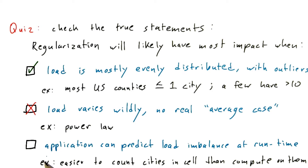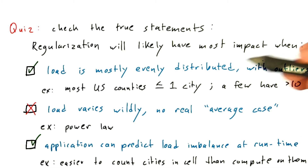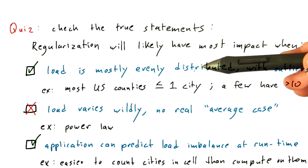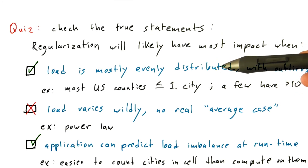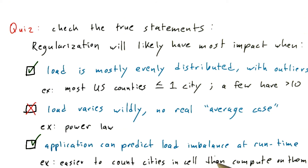Obviously for regularization, the whole goal is to extract regular parallelism from irregular parallelism. For that, you'd like to be able to know what is regular. So if you can predict where and how load imbalance is going to take place at runtime, then you can structure the application to deal with the load balancing on the spot. When load is relatively evenly distributed, it's almost regular already, and dealing separately with occasional irregularities is likely to work. If the load varies wildly, it's harder to know what to regularize to, and it's much easier to regularize the workload if you can predict what that workload is going to be.